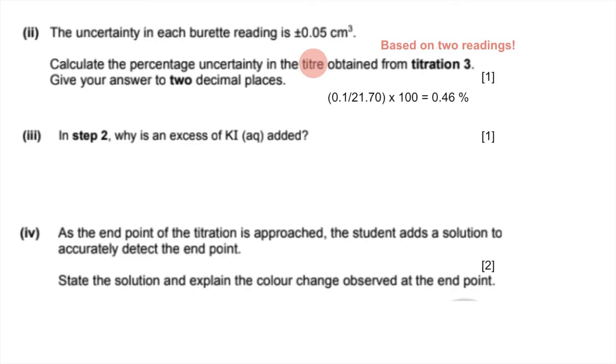Step two asks why is excess KI added. You need to say something like: to make sure all of the Cu²⁺ is converted to Cu⁺, or to make sure all of the iodine is produced for the titration.